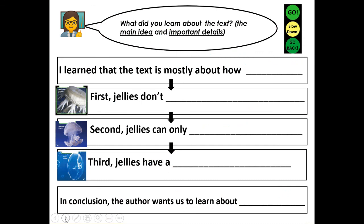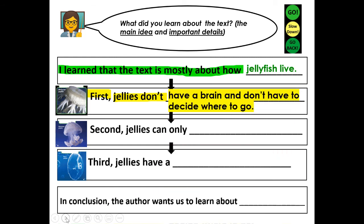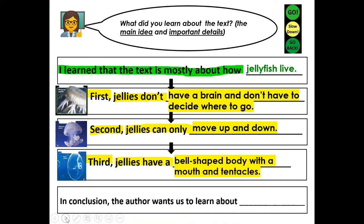Now it's time to check your writing with my example. Topic sentence: I learned that the text is mostly about how jellyfish live. First, jellies don't have a brain and don't have to decide where to go. Second, jellies can only move up and down. Third, jellies have a bell-shaped body with a mouth and tentacles. In conclusion, the author wants us to learn about jellyfish. All right boys and girls, I hope you had a good time writing — I know I did. Thank you for joining me. Have a great day.